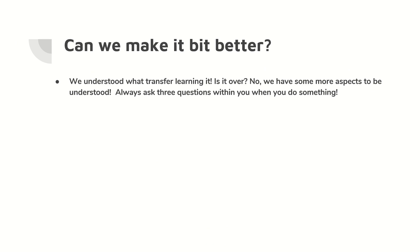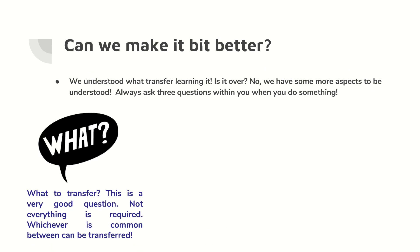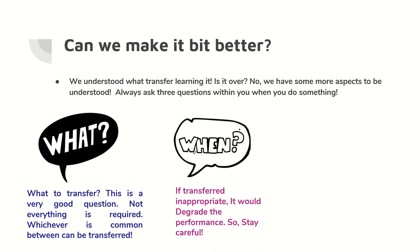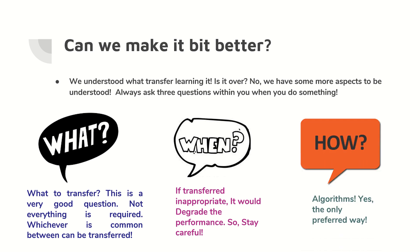There are three things to remember when doing transfer learning — ask yourself three questions. First: what to transfer? What are all the common features between task A and task B that can be transferred? Not all things need to be transferred. Second: when to transfer? This is most important — when you transfer, it should improve performance and not degrade it. Third: how to transfer? There are many algorithms for this, and examples will be given in the near future. These three questions — what, when, and how — are important when you go with transfer learning.